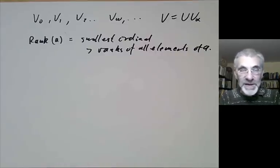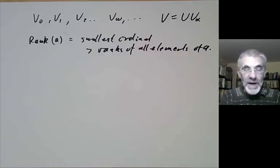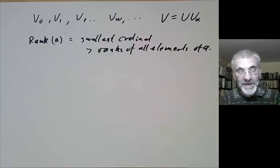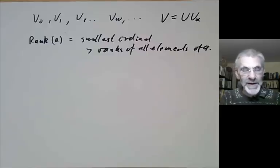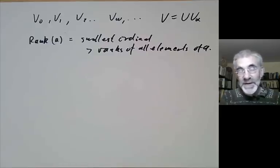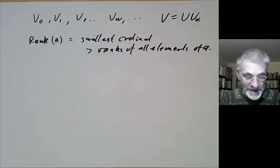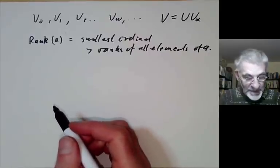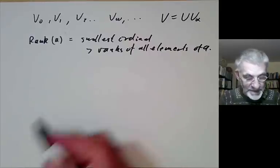In fact, it's so useless in ordinary mathematics that Zermelo didn't even include it in his original axioms for set theory in 1908. He added it to his axioms in 1930, a couple of decades later.